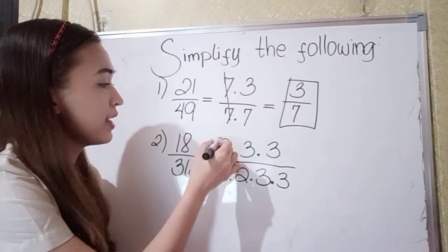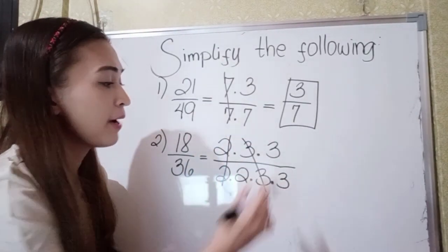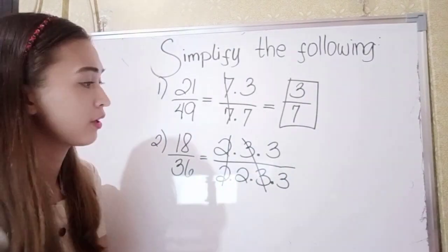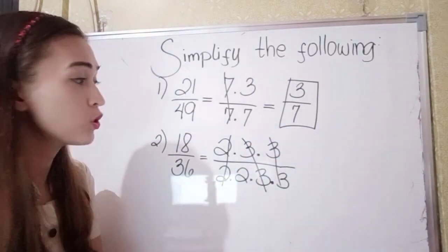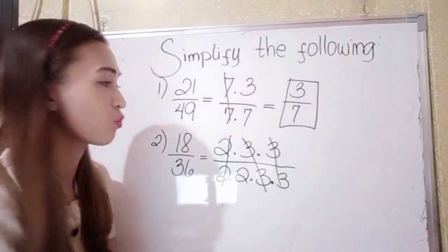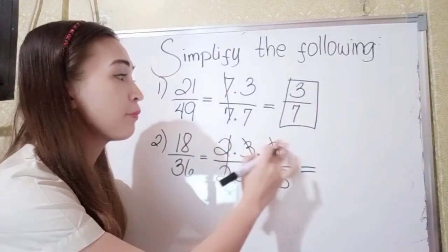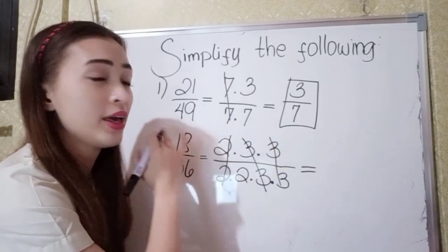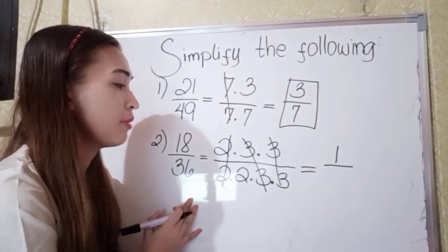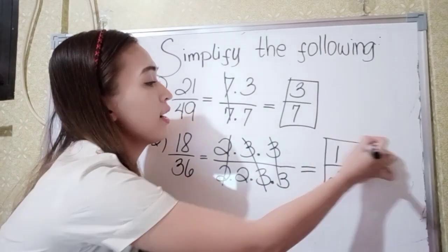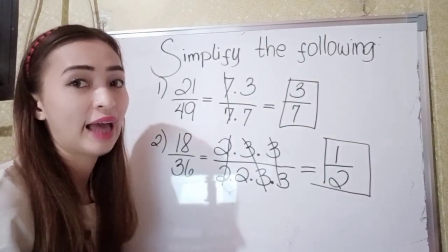Now let's divide. Since 2 divided by 2 is 1, so cancel. 3 divided by 3 is 1, so that is also cancelled. Since there is no number left in our numerator, just write 1 over the number in the denominator. So the simplified form of 18 over 36 is 1 half.